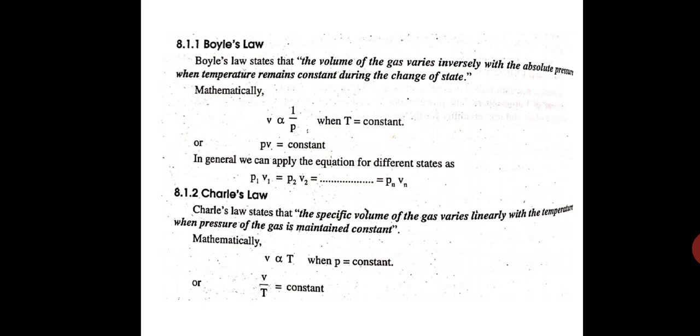Boyle's law states that the volume of the gas varies inversely with the absolute pressure when the temperature remains constant during the change of state. Mathematically, when T is constant, there are only three terms: volume, pressure, and temperature. You can consider a piston-cylinder arrangement. When the piston is compressing the air, the volume reduces and pressure increases. So volume is inversely proportional to 1 by P, or we can say it is inversely proportional to pressure.